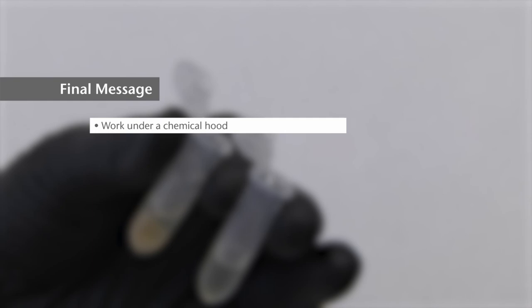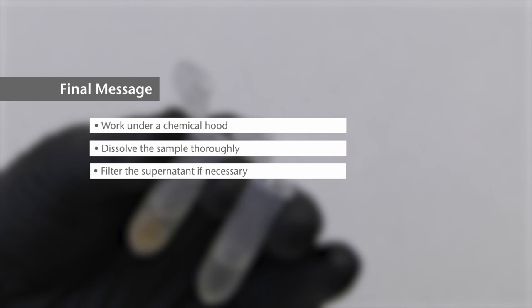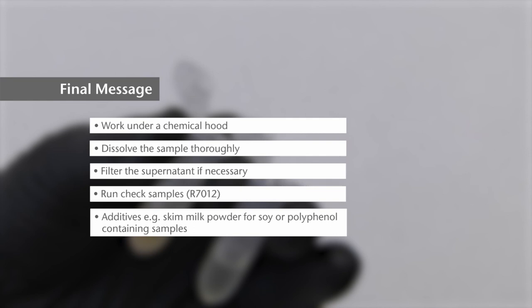Final message: It is recommended to work under a chemical hood. Sample should be dissolved after addition of cocktail patent and also after addition of 80% ethanol. Avoid any clumps. If the supernatant is not clear after centrifugation, filtrate the supernatant. It is recommended to also run check samples, for example R7012, with known concentrations for quality control.